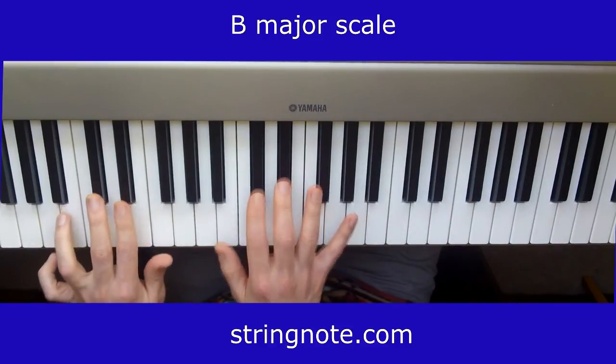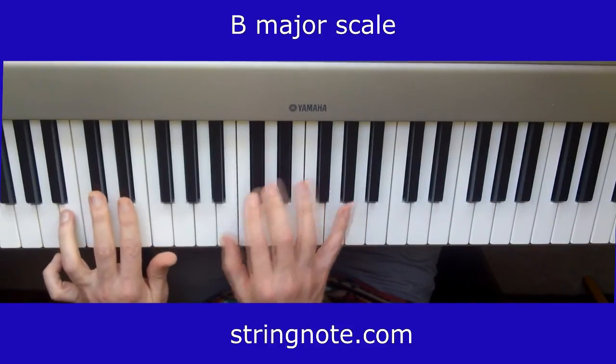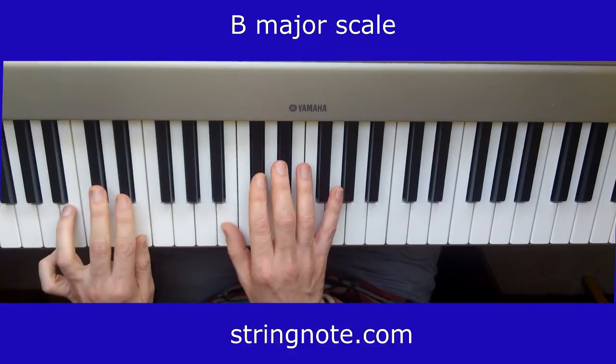Now when it comes to doing both hands at the same time, remember the structure. We go now paying attention to the white keys which are B and E, here we go.